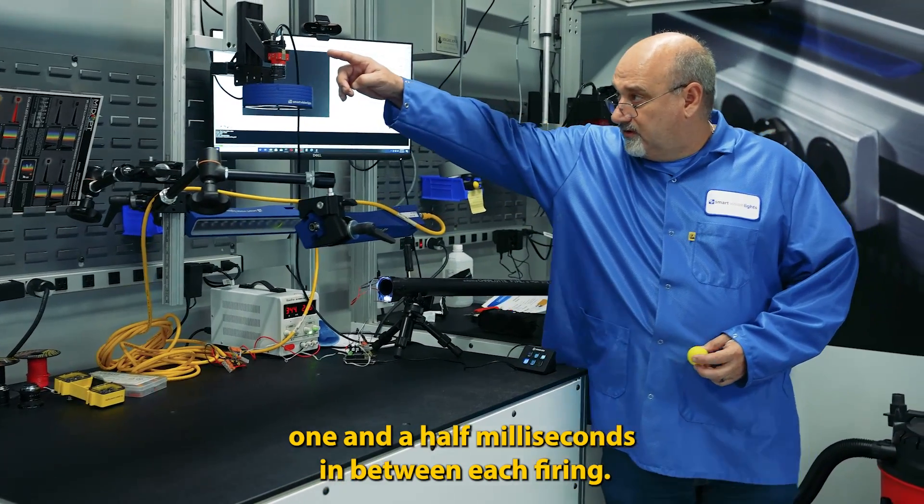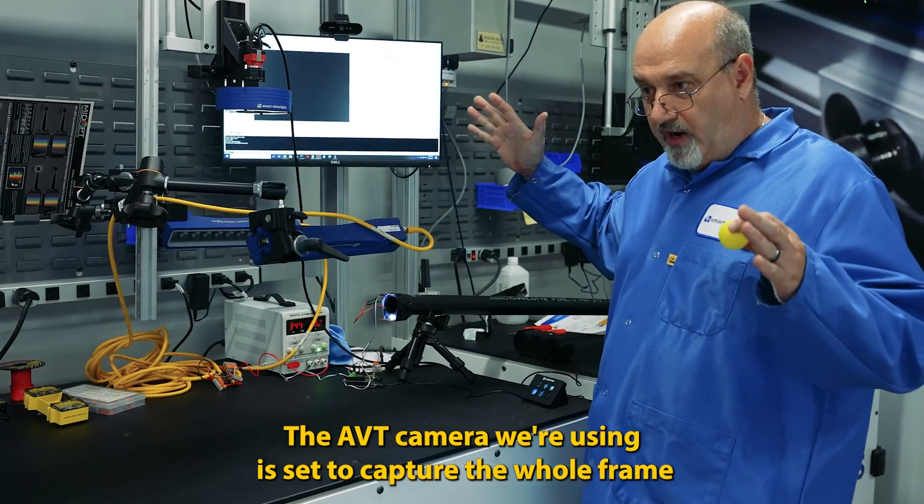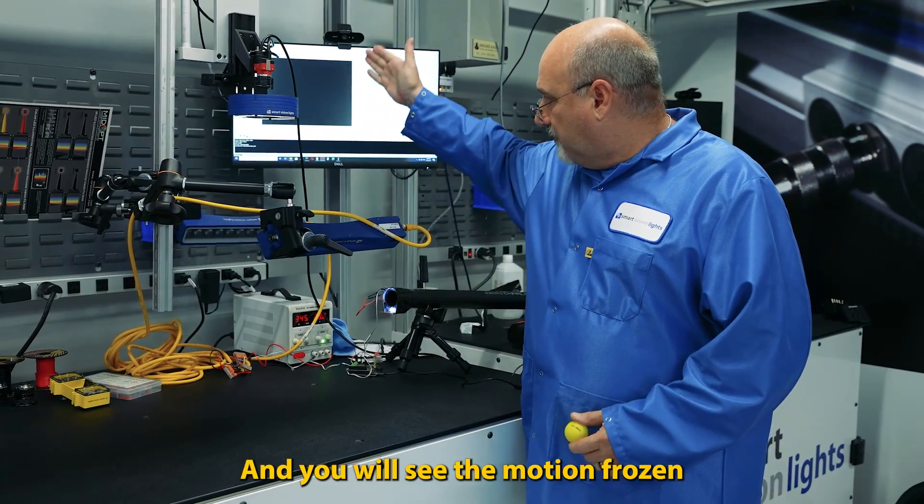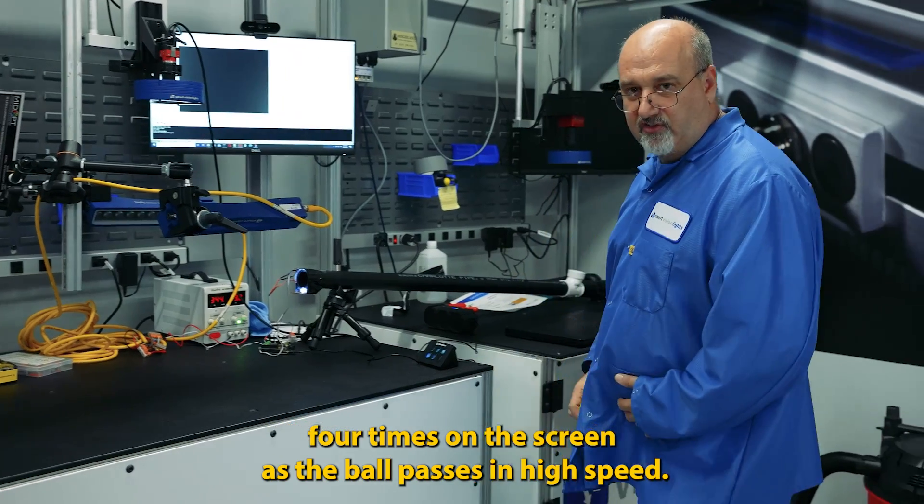The AVT camera we're using is set to capture the whole frame and all four pulses, and you will see the motion frozen four times on the screen as the ball passes in high speed.